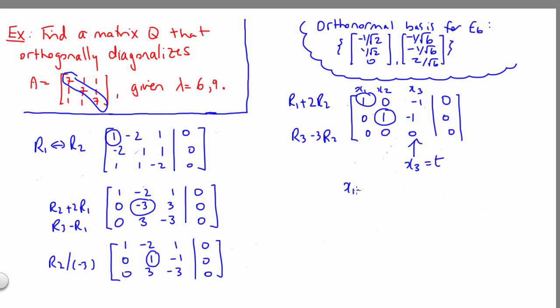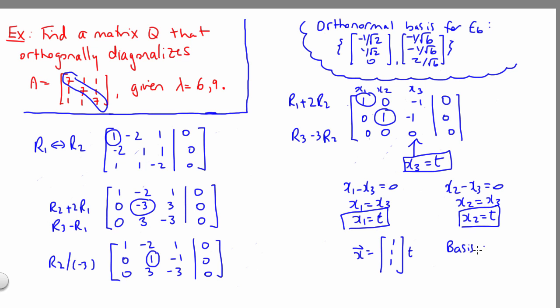The top row says that x1 minus x3 is equal to 0, meaning x1 is equal to x3, so x1 is equal to t. Doing the same thing for the middle row. x2 minus x3 is equal to 0, so x2 is equal to x3, meaning x2 is equal to t. So if we write up our vector in vector form, it looks like 1, 1, 1 times t. And a basis for this eigenspace E9 will be the single vector 1, 1, 1.